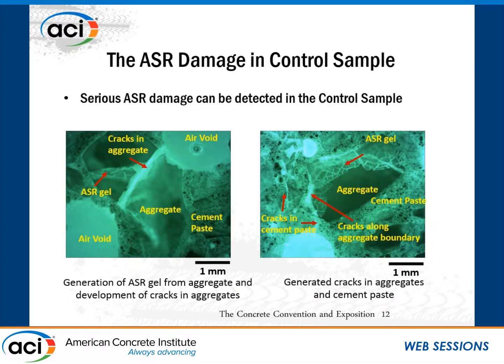This is the image from the microscopy test, and serious ASR damage can be observed from the samples. In the control type samples (Type 1) without any added glass powder, the aggregate surrounded by air voids can more easily be damaged by ASR. The generated ASR gel can also be observed, and the cracks inside the aggregate and in cement paste can be clearly detected. Cracks along the aggregate boundary can be observed, which can lead to detachment between the cement paste and the aggregate.